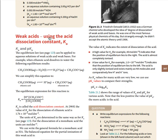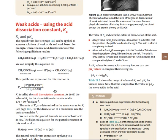Now let's calculate the pH of a weak acid. Weak acid does not completely dissociate in water like a strong acid. Since it doesn't completely decompose, you need to apply chemical equilibrium when calculating the concentration of hydrogen ions and thus the pH of a weak acid.